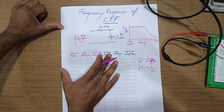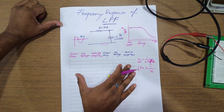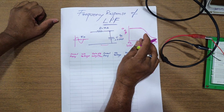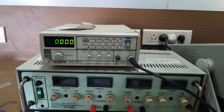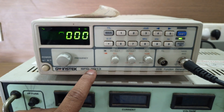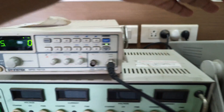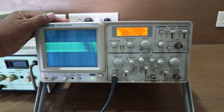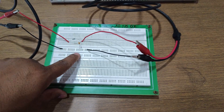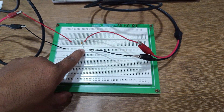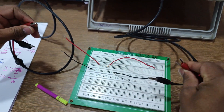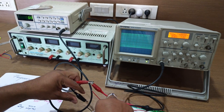In today's session we are going to perform this actual practical on the setup and take readings to justify the output graph. For this we require a function generator with output capacity up to 1 megahertz with variable frequency, a CRO, and the circuit setup with a 1k resistor and 0.1 microfarad capacitor. First we have to verify that everything is calibrated.